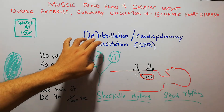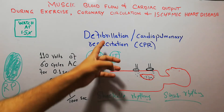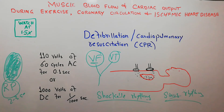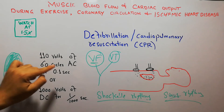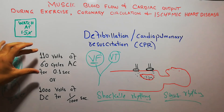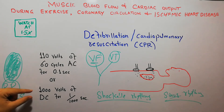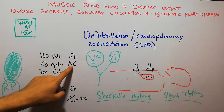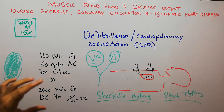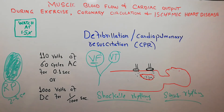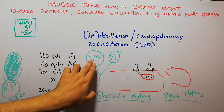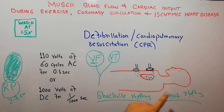Regarding the amount of current and duration: 110 volts of 60-cycle alternating current for 0.1 seconds is used in one defibrillation shock. Multiple shocks can be given. Another option is 1000 volts of DC direct current for one-thousandth of a second. These different voltages are applied through two electrodes and can bring the heart out of ventricular fibrillation or ventricular tachycardia, starting the sinus rhythm.